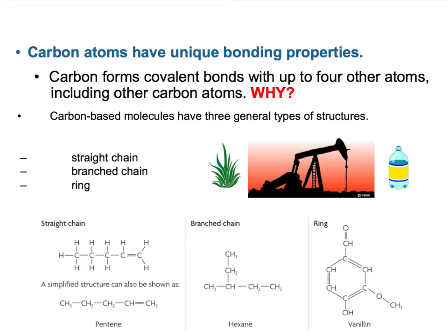Many times when we draw these structures, we won't even draw the actual carbons explicitly. We might draw a straight chain and just put the hydrogens on the ends. In fact, in organic chemistry sometimes we don't even draw the hydrogens because they're so common.